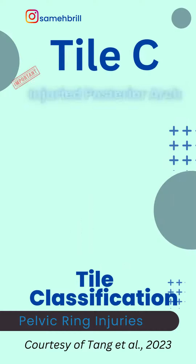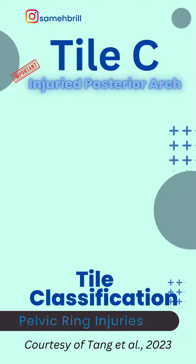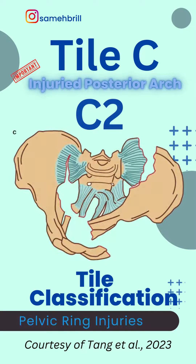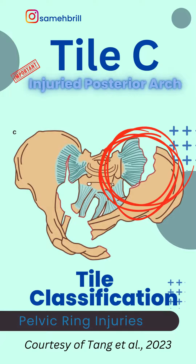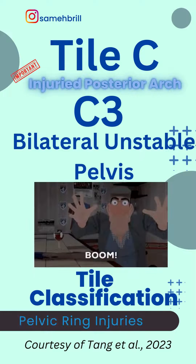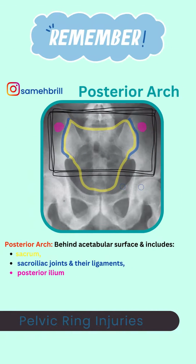Finally, in Type C, the posterior arch is completely injured. They can be C1, a unilateral unstable fracture; C2, a bilateral unstable fracture where an unstable fracture is on one side and a partially stable fracture on the other side; and C3, unstable fracture on both sides. Remember, it's all about the arch of the pelvis.